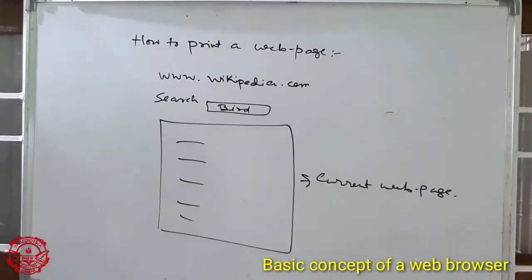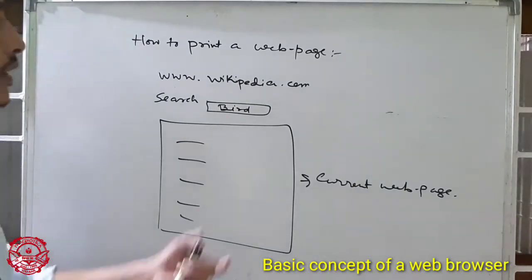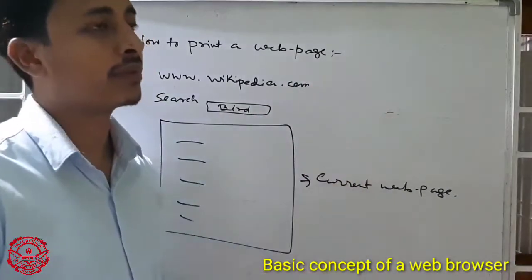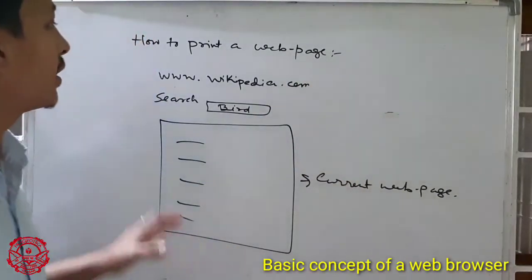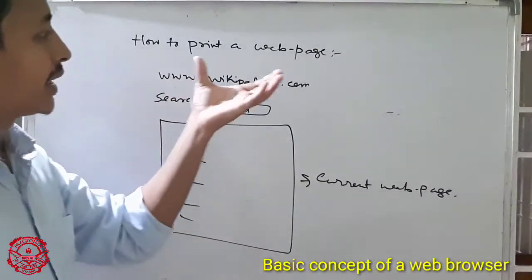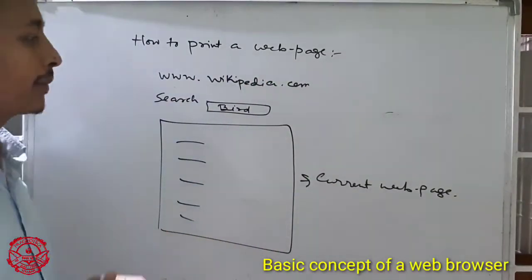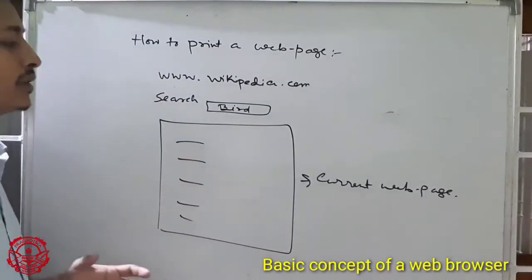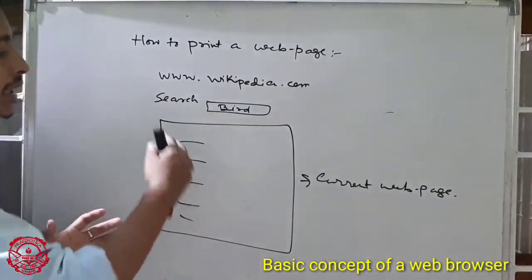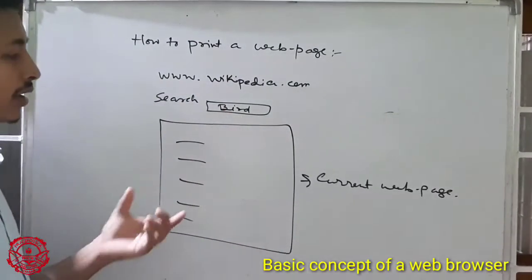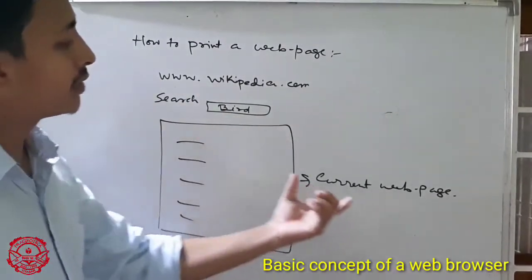You can see here how to print your web page. To print your web page, click the tools button and then select print. There is a tools button in your web browser, Internet Explorer. You just select the tools button and after that there is a print option. You can just click the print option.